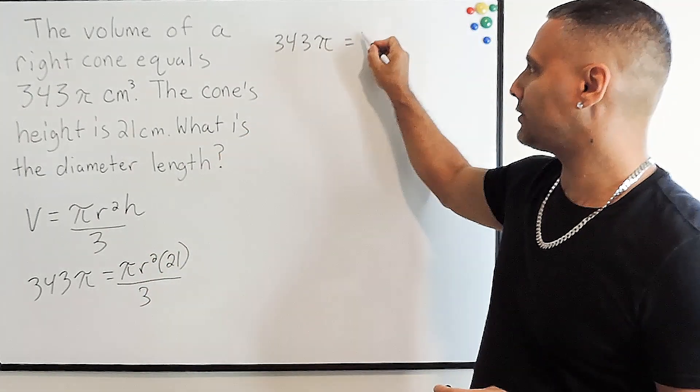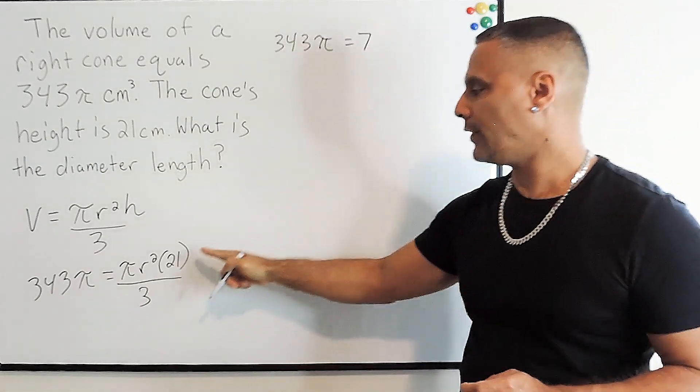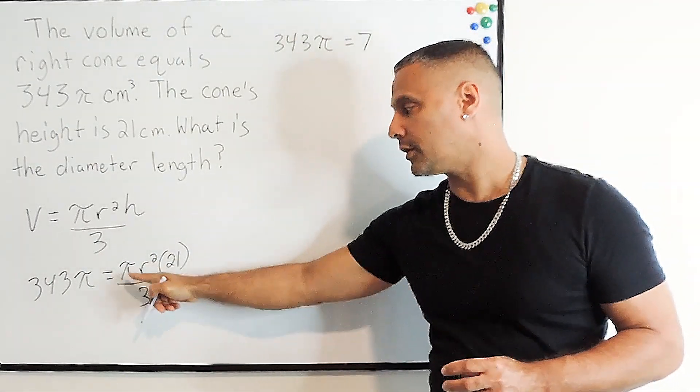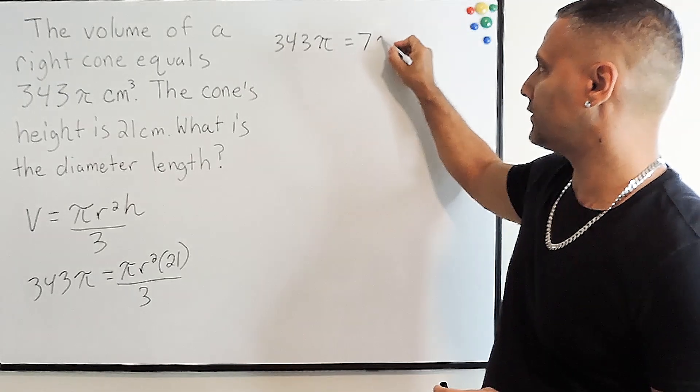So we're going to write 7 right after our equal sign, and then we're going to take everything that's left over, which is πr², and write that after the 7.